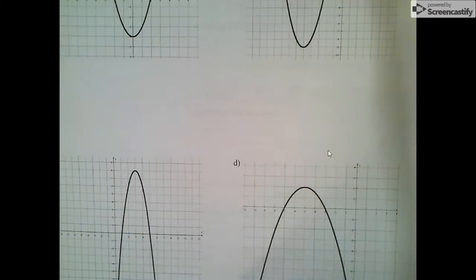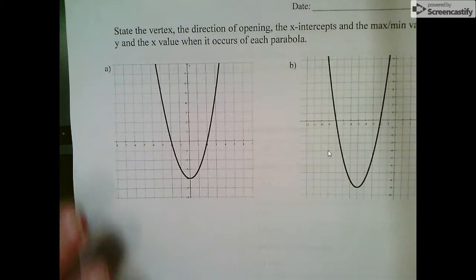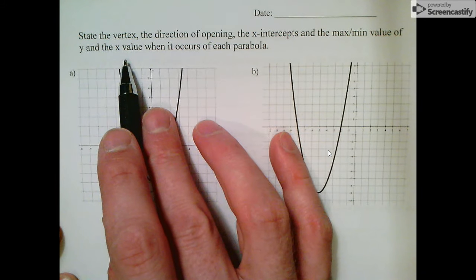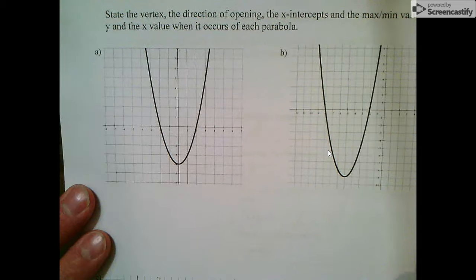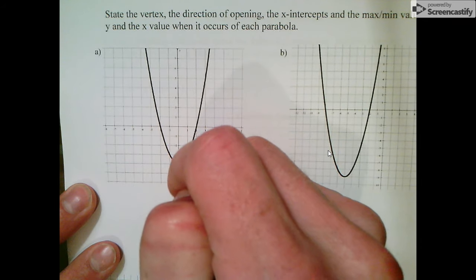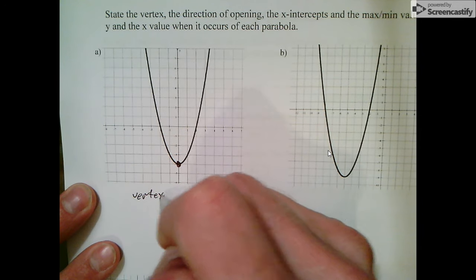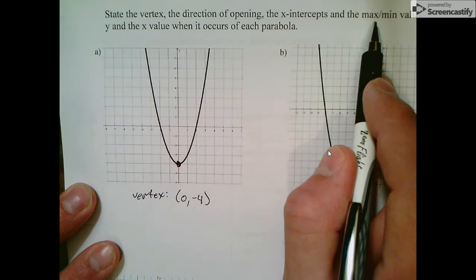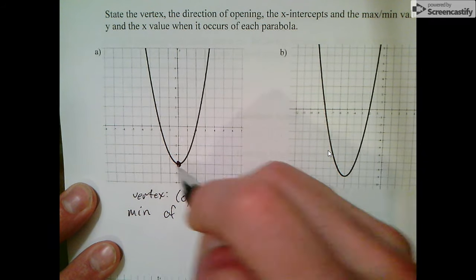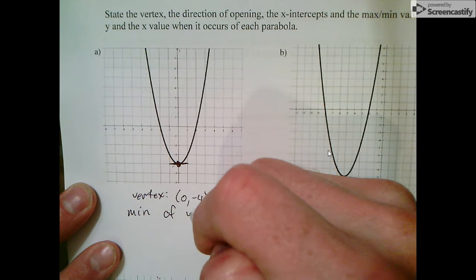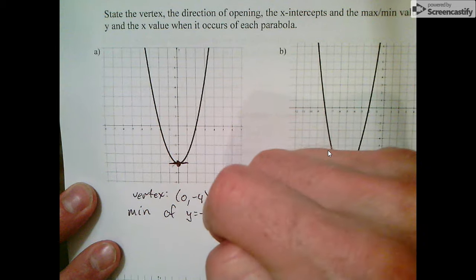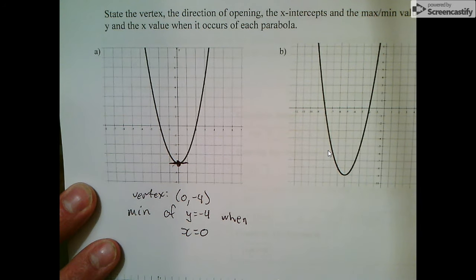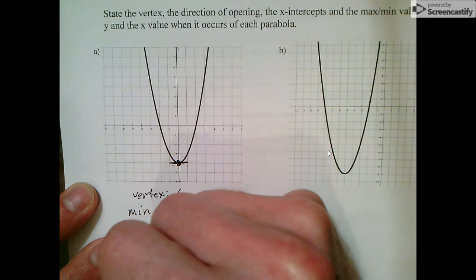Let's try one or two examples. We're going to state the vertex, the direction of opening, the x-intercepts, the maximum or min value of y, and the x value when it occurs for each parabola. Looking here, the vertex is this mirror point down here at (0, -4). It has a min value of y equals negative 4 when x equals 0. It opens up.